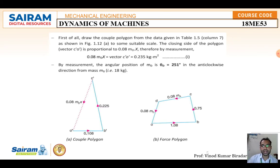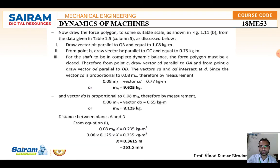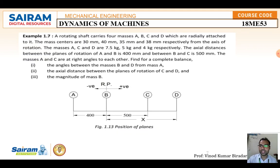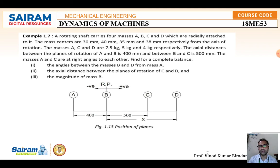Now the last problem. A rotating shaft carries four masses A, B, C, and D radially attached to it. The mass centers are 30, 40, 35, and 38 mm respectively from the axis of rotation. Masses A, C, D are 7.5 kg, 5 kg, and 4 kg respectively. The axial distance between planes A and B is 400 mm and between B and C is 500 mm. Masses A and C are at right angles to each other.